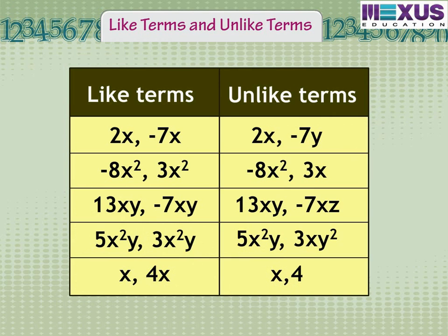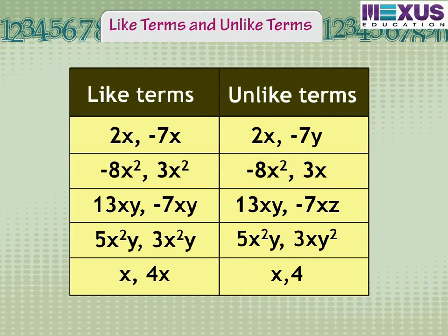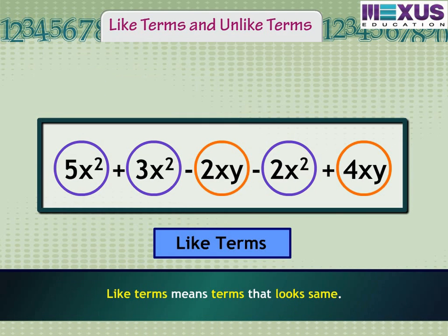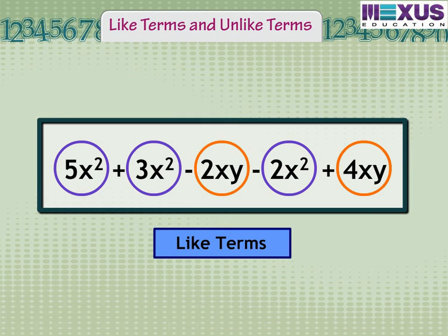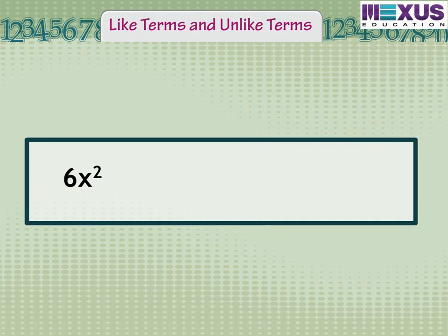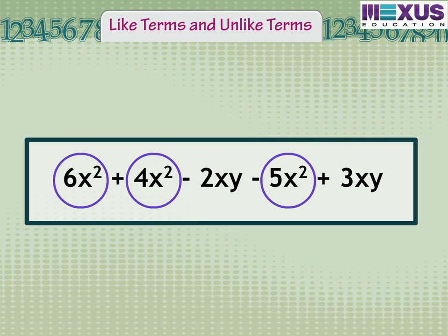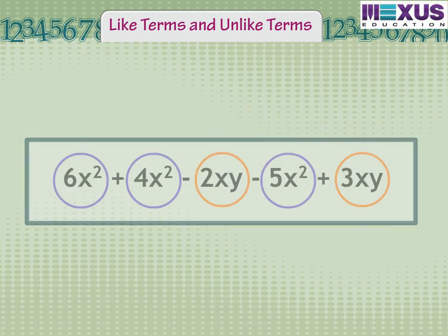Terms are classified into two types: like terms and unlike terms. The terms that look alike or are the same are known as like terms. For example, in the expression 6x squared plus 4x squared minus 2xy minus 5x squared plus 3xy, we can see some terms that look the same: 6x squared, 4x squared, and 5x squared are like terms. Similarly, minus 2xy and 3xy are like terms.